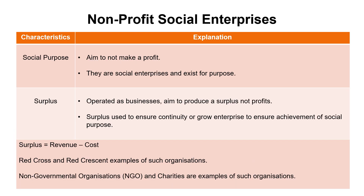Not-for-profit organizations use the term 'surplus' instead of profit. Any money made is kept within the business to fund its good works — it's not paid out as dividends or distributed to shareholders. Examples include the Red Cross and Red Crescent. Any surplus goes straight back into the organization to fund operations and help achieve its purpose, such as expanding to more countries.